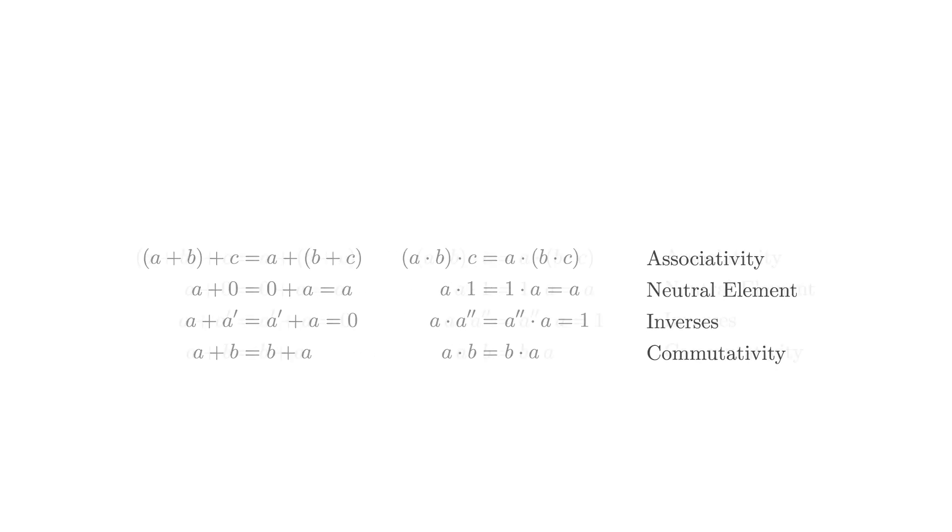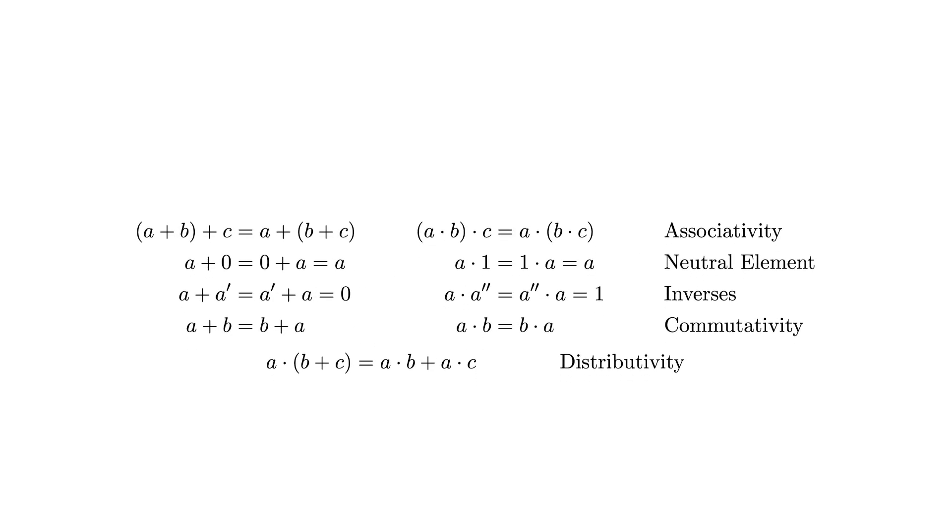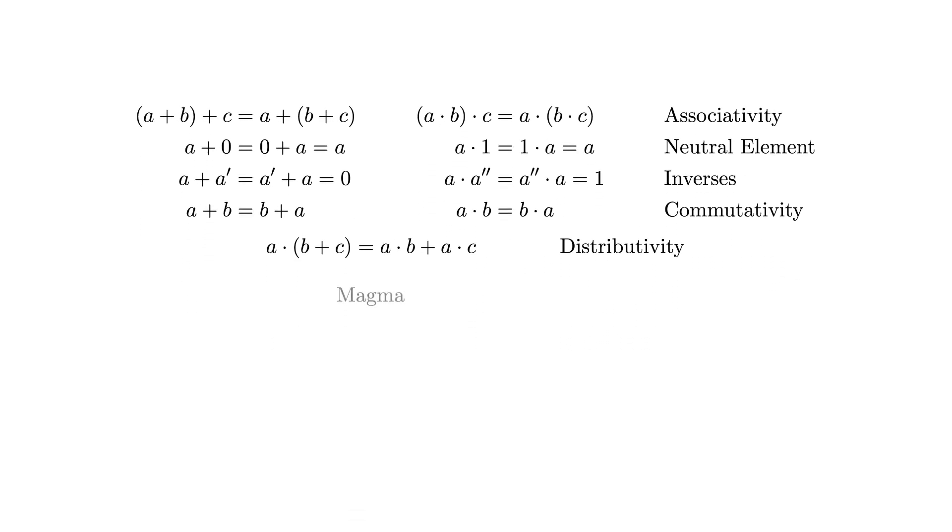We have now reached the end of our story. In this video, we learned what associativity, existence of a neutral element, existence of inverses, commutativity, and distributivity are. We use these properties to give the definition of a magma, semigroup, monoid, group, ring, commutative ring, and field. And it was all quite painless, so maybe life is mostly fair after all.